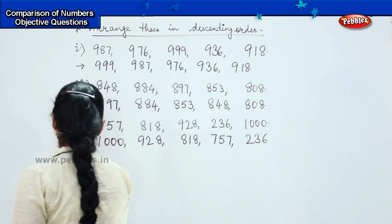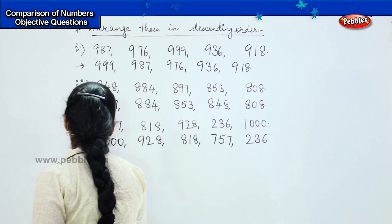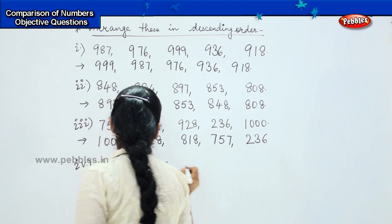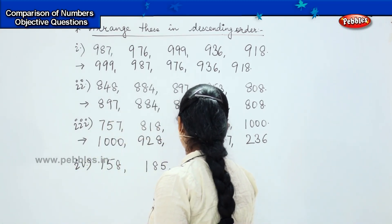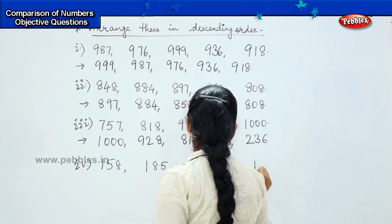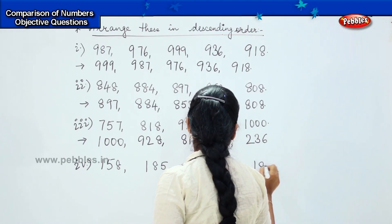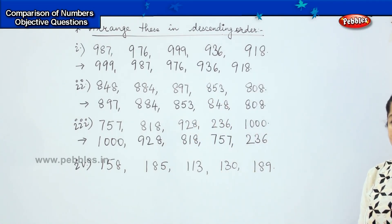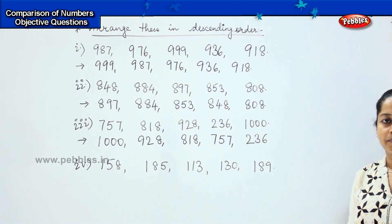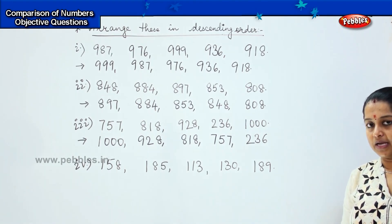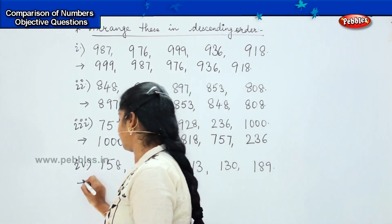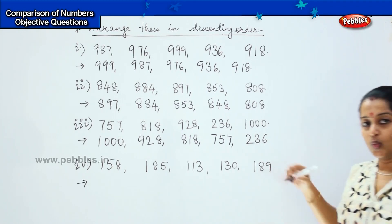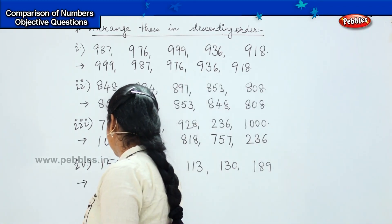Here is my next question: 158, 185, 113, 130, and 189. Can you see the numbers on the board? Can you tell me the largest number? Very good, it is 189. So we will start with 189.